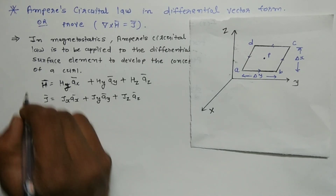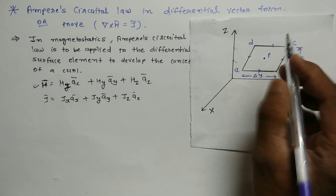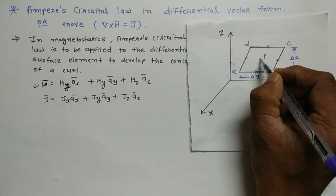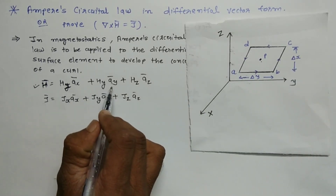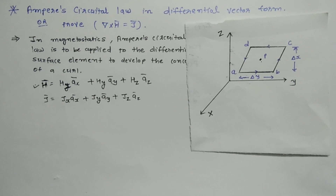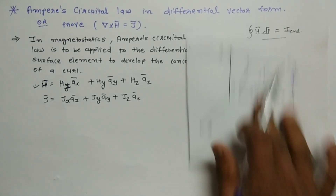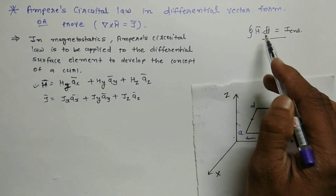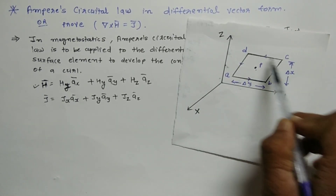Assume that the magnetic field intensity H bar at the center of this plane at point P is: Hx·Ax bar plus Hy·Ay bar plus Hz·Az bar. Now for applying Ampere's Circuital Law, we calculate the closed integral of H bar dot dL bar along the closed path A, B, C, D.